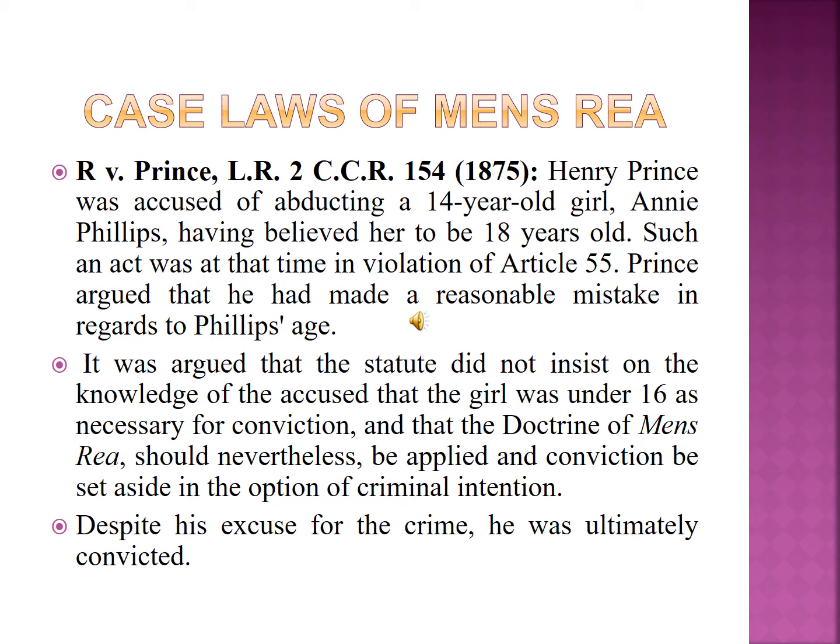There are many cases pertaining to mens rea. One of the leading cases is R v. Prince. In this case, Henry Prince was accused of abducting a 14-year-old girl named Annie, having believed her to be 18 years old, in violation of the relevant statute. Prince argued he had made a reasonable mistake regarding her age. However, it was argued that the statute did not require knowledge that the girl was under 16 as necessary for conviction, and the doctrine of mens rea should be applied. Despite his excuse, he was ultimately convicted.